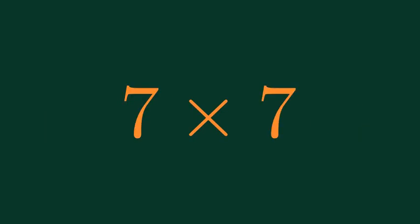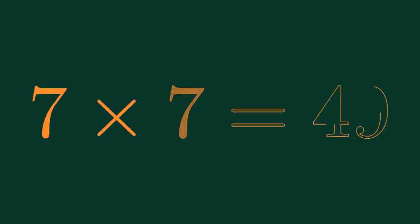What is 7 times 7? 7 times 7 is equal to 49.